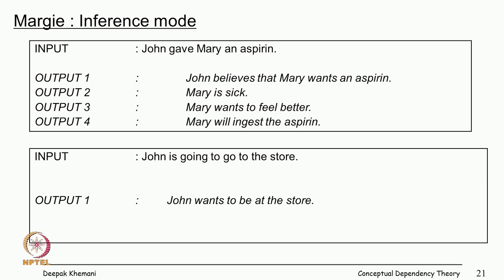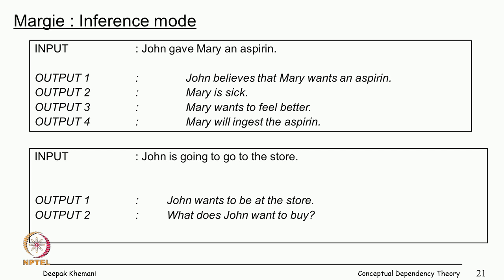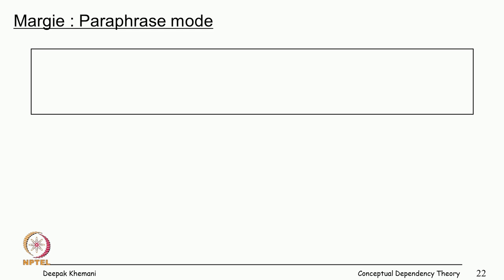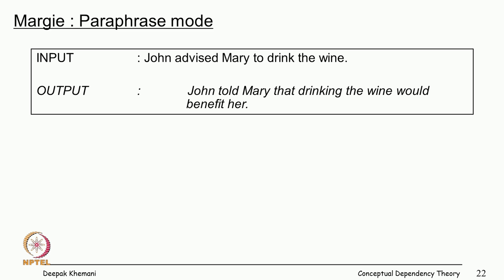'John is going to the store.' One inference is that he wants to be at the store; another is that he may want to buy something. If you are really knowledgeable about the world you might say he will trade some money and get something from the store. You can also work in a paraphrase mode: once you have generated a conceptual dependency representation of a sentence, you can generate a natural language sentence from that.